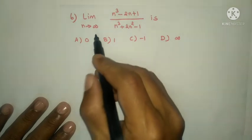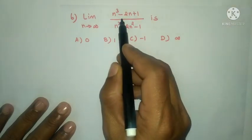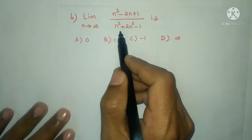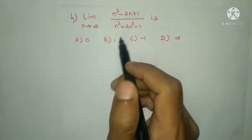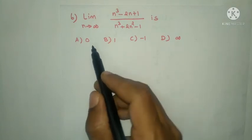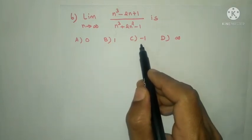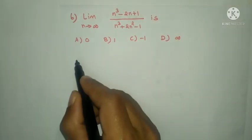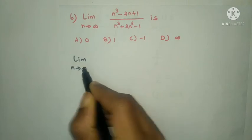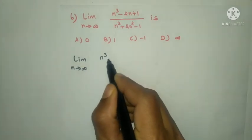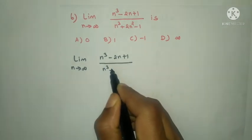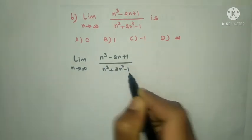Next question: limit n tends to infinity of (n³ minus 2n plus 1) divided by (n³ plus 2n² minus 1). Options: A: 0, B: 1, C: minus 1, D: infinity. The highest power in the numerator is n³, and the highest power in the denominator is also n³.